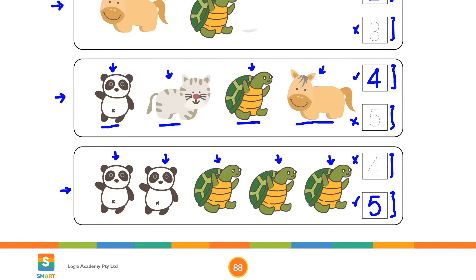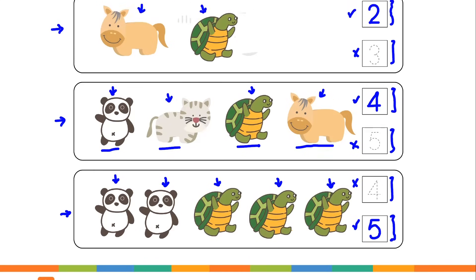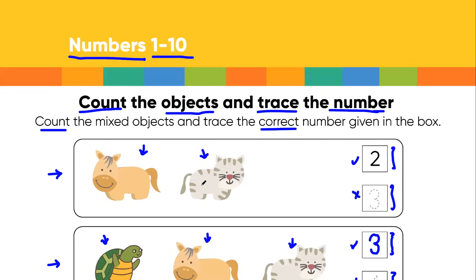So we are done with our task. Here we have to count the mixed objects which are present on the left side. After counting, we have to keep the total count in our mind and then trace the correct number that is given in front of it. Thank you so much, kiddos.